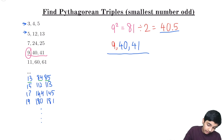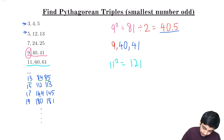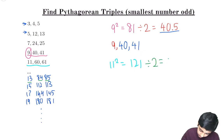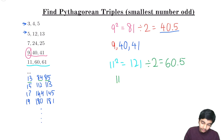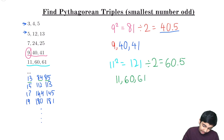Similarly, for example, with 11, 60, 61, we can do 11 squared equals 121. Then we divide by 2 to get 60.5. And then we know that 11, 60.5 minus 0.5 is 60, so 11, 60, 61 is a Pythagorean triple.